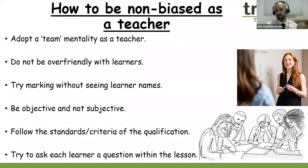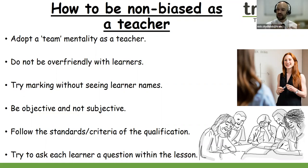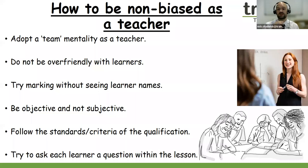Don't be too over-friendly with certain learners. You could try marking learner work without seeing their names. Follow your standards or criteria so you're not using your own opinions when marking learner work. Also, try to ask every learner a question within the lesson — regardless of whether you have five learners or thirty, asking each of them a question is going to promote inclusion.